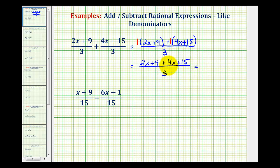And now we want to combine the like terms in the numerator. Two x plus four x would be six x, and nine plus fifteen is equal to twenty-four.